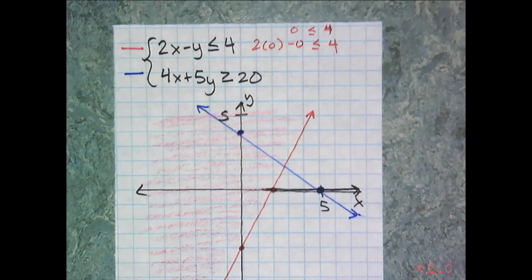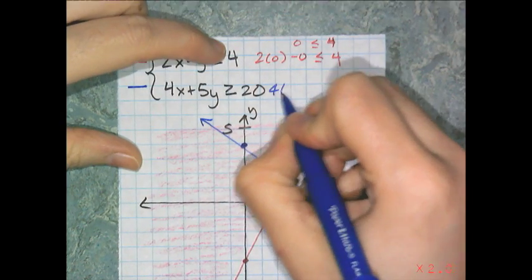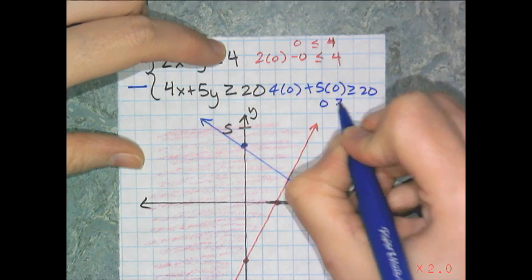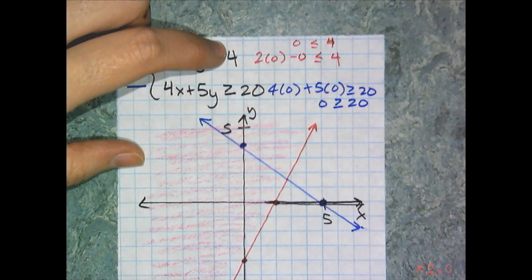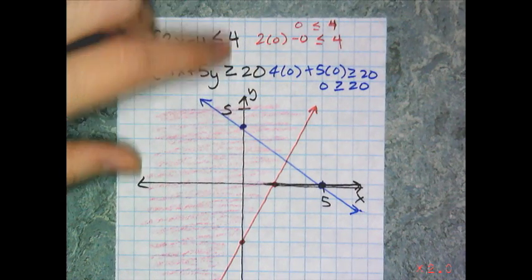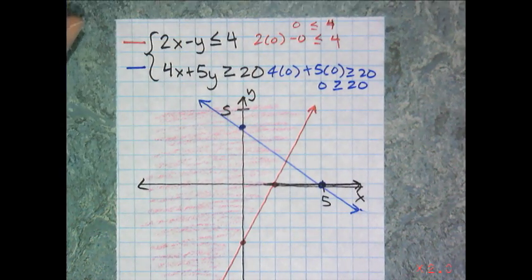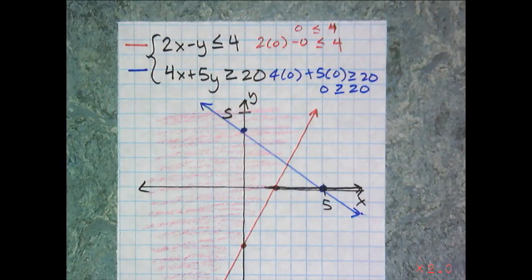And I have to test a point, and I can test 0, 0, because it's not on the boundary. So is 4 times 0 plus 5 times 0 greater than or equal to 20? And last time I checked, 0 was not greater than or equal to 20. So that is false, so that means I'm going to shade where 0, 0 is not. So in this case, I'm going to shade above the blue solid line.